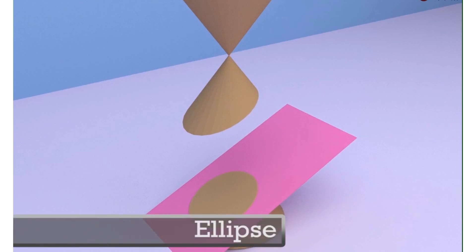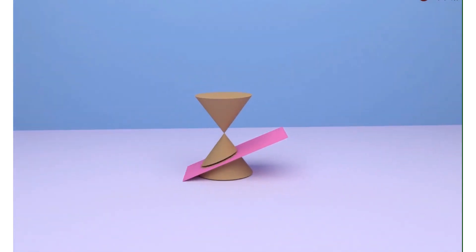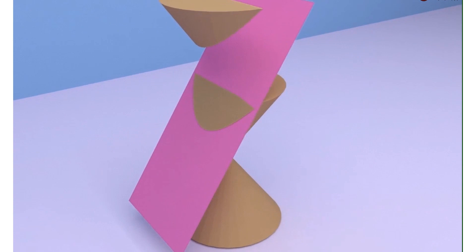For the third situation, I'm going to increase my angle further such that this plane is now parallel to the neck of the cone. At this angle, when we cut the cone with the plane, my new shape that we are going to get is called a parabola.